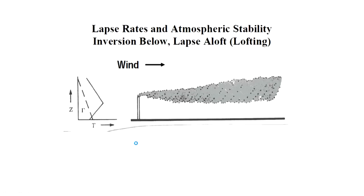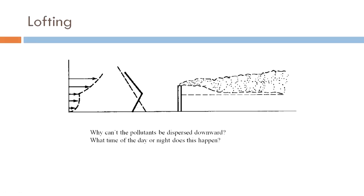And then lofting, which is good. Inversion below and lapse aloft. Here is the dry adiabatic lapse rate, the packet of air with inversion here. Lofting — as in lifting up — why is that? It depends on where I am releasing the pollutant. If I am releasing it above this height, it is not going to come further down. Why? Below is hotter, above is cooler, so hot air is going to come up. It would not break through this barrier, so any pollutant given out here would not come below this inversion layer — it is going to be lofted up.